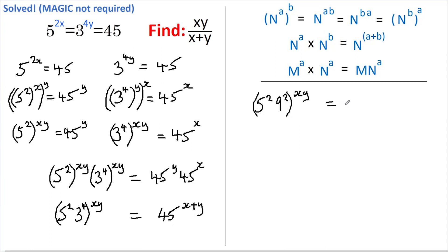And on the right-hand side, I'm going to rewrite 45 as 5 times 9, and that's all to the power of x plus y.